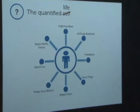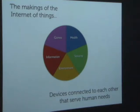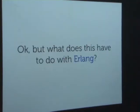These devices fit into different areas: health, security, measuring your environment, or giving you information. There's the Philips Hue light where you can set it up to turn lights red when there's traffic or your server's down. Where I haven't seen a whole lot is in games, which is interesting. Once there's a more established platform for connecting things to the internet, you'll start seeing more physical computing platforms for entertainment. Basically, all these devices are connected to each other and serve human needs.